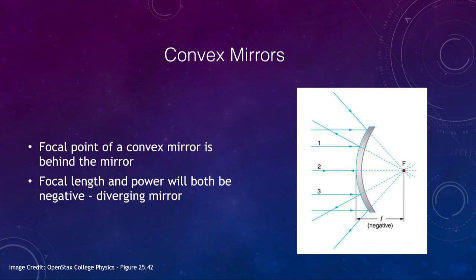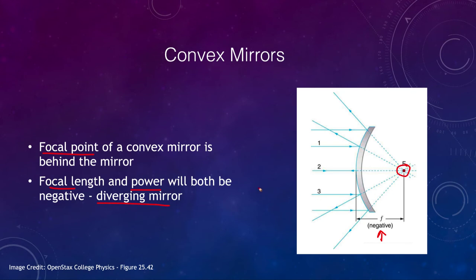Now let's look at the other type of mirror — a convex mirror. In this case the mirror bows outward, and the focal point is actually behind the mirror, so the focal length is actually negative. Both the focal length and power will be negative because this is a diverging mirror. Light spreads outward when it reflects off this type of mirror and appears to come from a focal point behind the mirror.